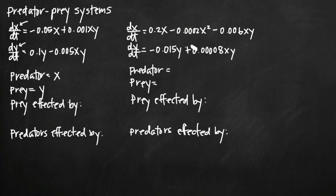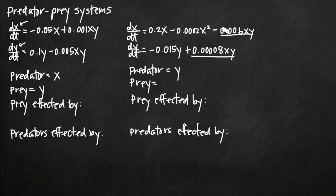Looking at the second system of equations, we again see interaction terms — one negative and one positive. The positive interaction term means this must be the predator equation, because the predator population increases when the two species come together. So the predator is represented by y. The negative interaction term means the prey gets eaten, so the x variable represents the prey in this second system.